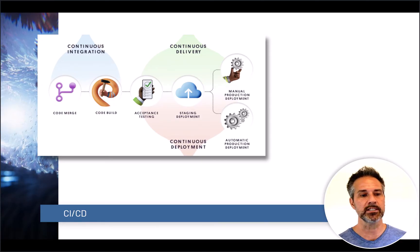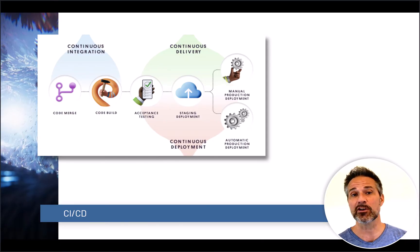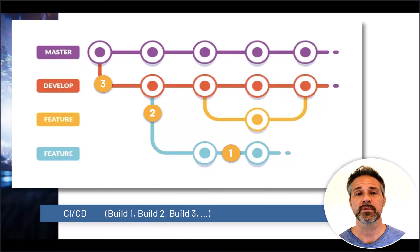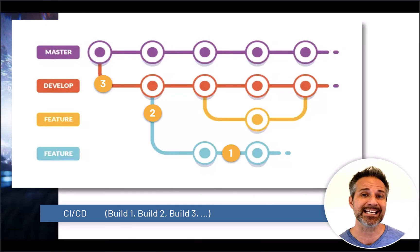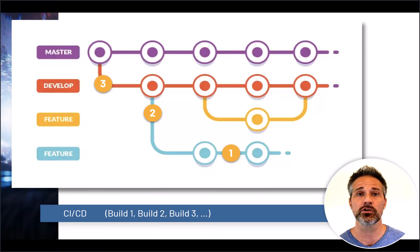Looking at a visual overview: continuous integration covers the code merges and the build. Then in continuous delivery, we confirm our tests have passed, move the project to a staging environment — somewhere not yet ready for end users but almost there — and make sure the process works really well before deploying to end users. You can do automated testing and automated delivery of results regardless of any particular version control flow, but it helps to understand how this maps to your branching strategy.